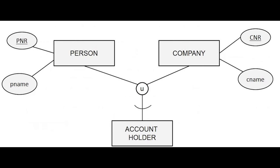For example, we have person entity superclass and company entity superclass types. Below them, we have the subclass account holder. Account holder can belong to both the superclass person and the company, denoted using the circle with U.